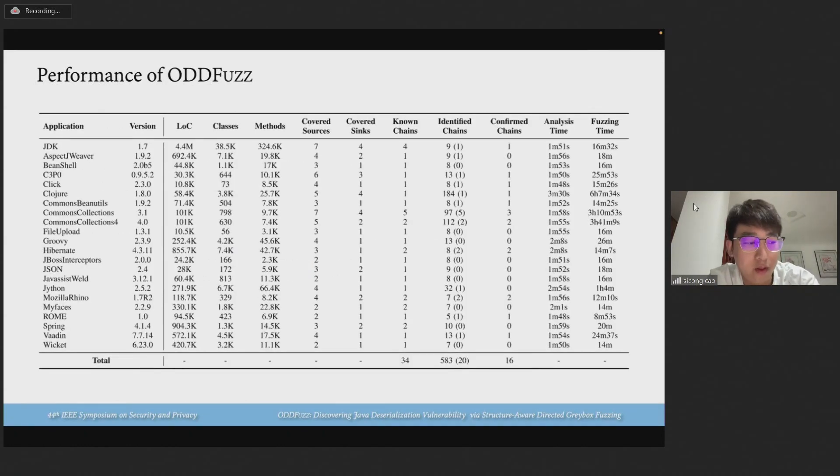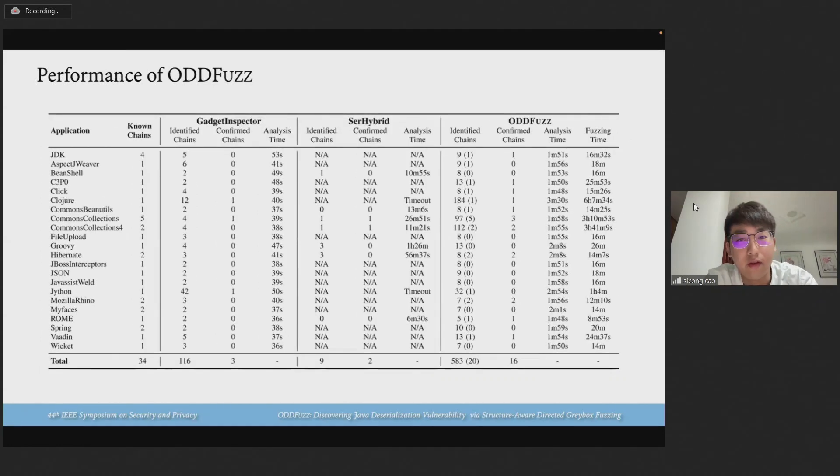As shown in this table, AuditFast statically identified a total of 20 out of 34 known gadget chains and dynamically generated sink-reachable injection objects for 16 out of these chains. There are no false positives. The remaining 14 gadget chains are missed by our approach in the static identification stage, mainly due to limited support for certain dynamic features. Compared to baselines Gadget Inspector and SerialHybrid, we can find that our approach reports 16 gadget chains without false positives and all their identified chains are covered by our approach.